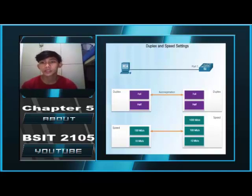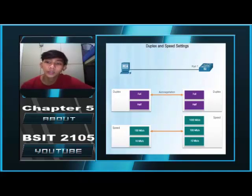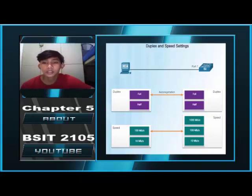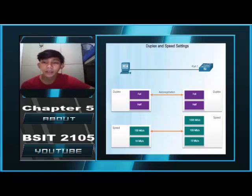Duplex and Speed Settings. Two of the most basic settings on a switch are the bandwidth and duplex settings for each individual switch port. It is critical that the duplex and bandwidth settings match between the switch port and the connected device, such as a computer or another switch. There are two types of duplex settings used for communication on an Ethernet network: half duplex and full duplex. Full duplex: both ends of the connection can send and receive simultaneously. Half duplex: only one end of the connection can send at a time.